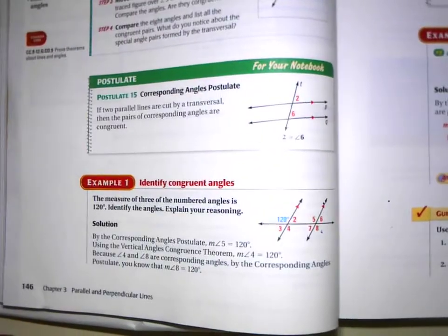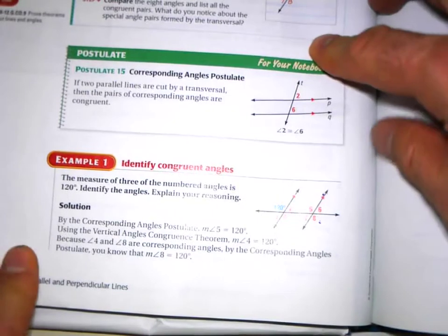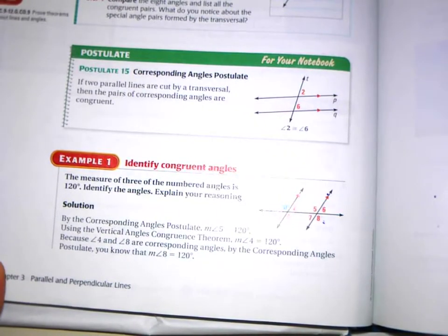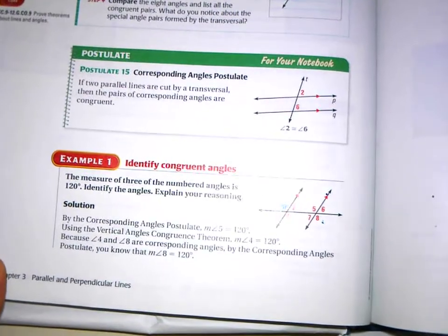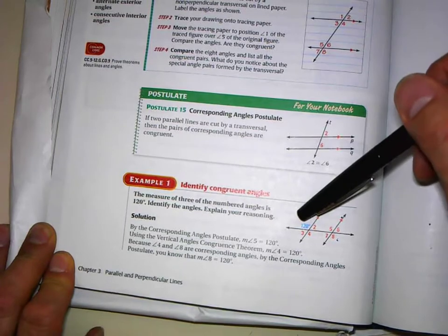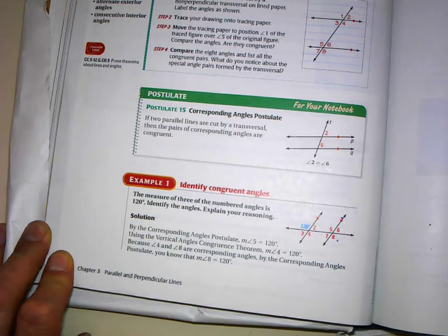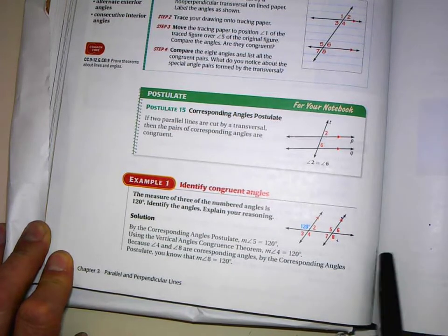Let's go back to the book and do some examples. Look at example 1 on page 146. So if this angle here is 120 degrees — first of all, which line is the transversal? Which of these three lines is the transversal? It's the one running horizontal. That's your transversal.